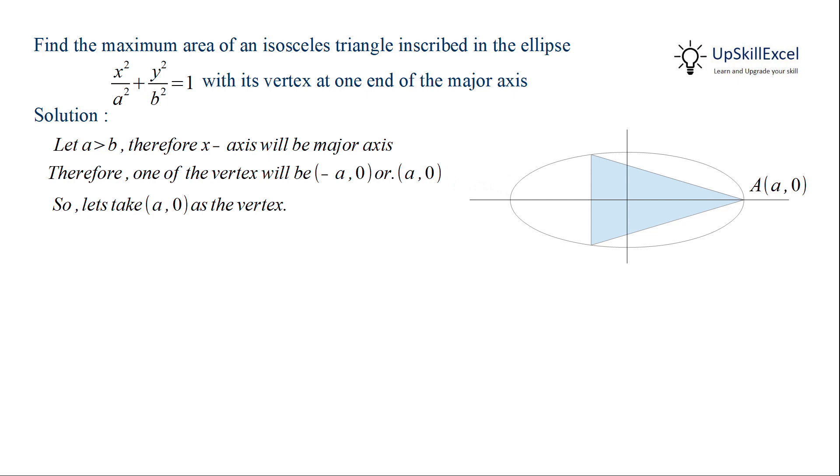Now as the triangle is an isosceles triangle, the other two vertices will be B and C. So let the coordinate of B be (x, y) and by symmetry the coordinates of C will be (x, -y).